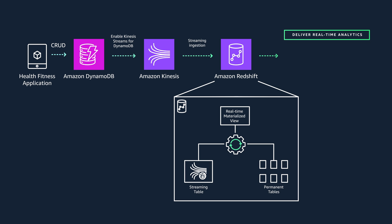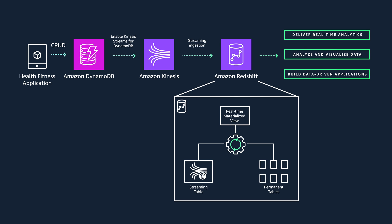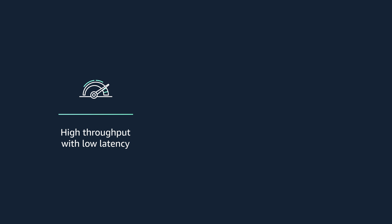Once the data is refreshed in the materialized view, you can perform downstream processing and transformations of streaming data using SQL, or use your existing BI and analytics tools for real-time analytics. With this pattern, you get three key benefits. Redshift can process several gigabytes of data per second from Kinesis data streams, allowing you to experience low latency and high throughput when consuming streaming data. So you can derive insights from your data in seconds instead of minutes.